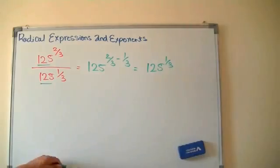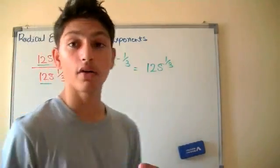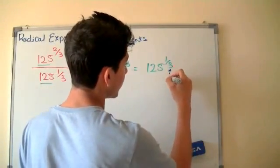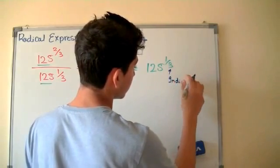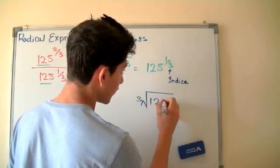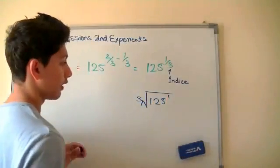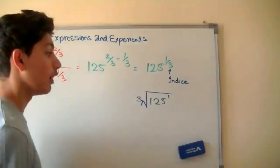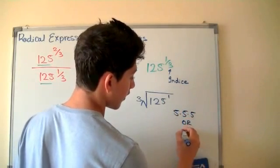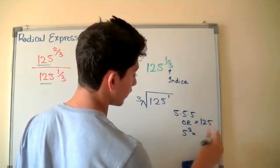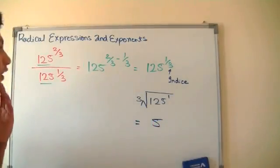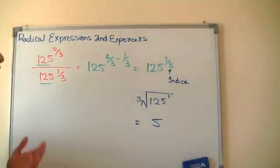Now, how do we solve 125 raised to 1 over 3? Consider the denominator as the index — so it's the cube root of 125 raised to the numerator, which is 1. The cube root of 125 is 5, because 5 times 5 times 5, or 5 cubed, equals 125. So the answer is 5.